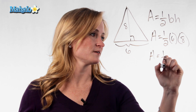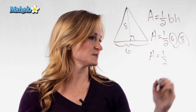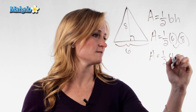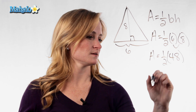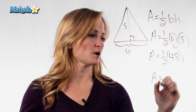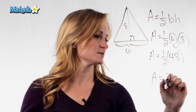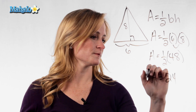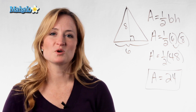Leave the half and multiply: eight times six is 48, and then finish the problem out. Half of 48 is 24, and there's the area of our triangle.